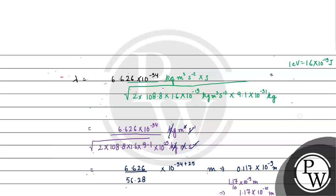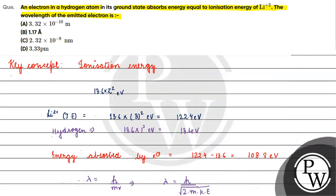We know that 10⁻¹⁰ meters is the value of 1 angstrom, so the answer is 1.17 angstrom. Coming back to the question, the correct answer is Option B. I hope you understood it well. Thank you and all the best.